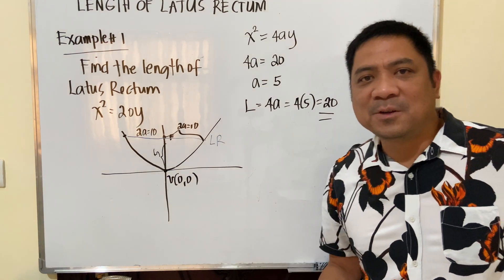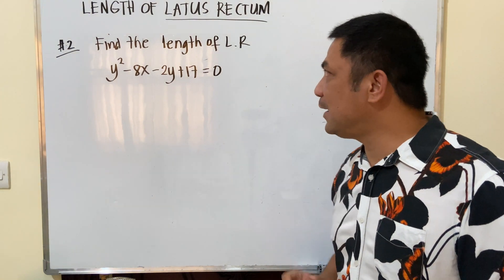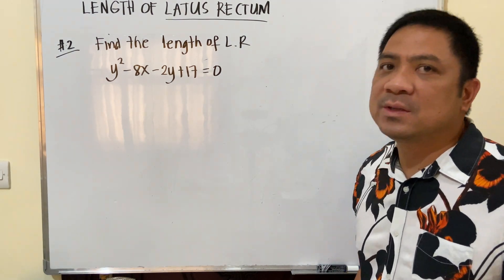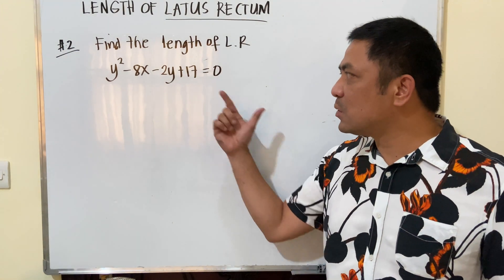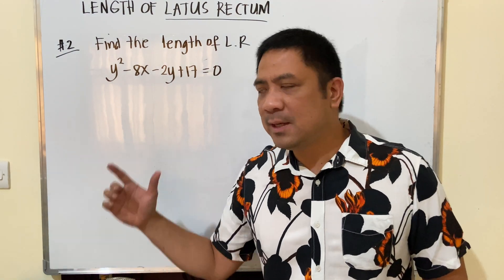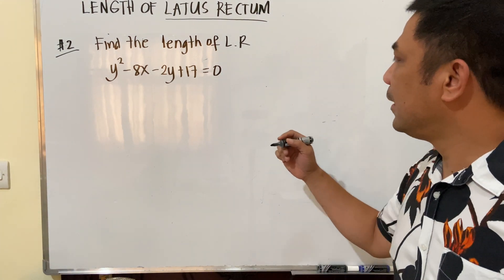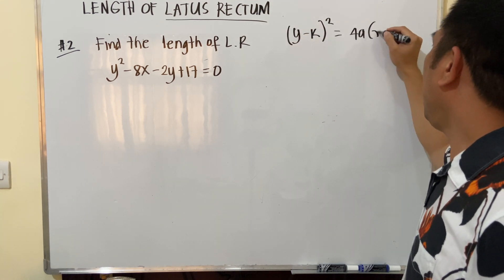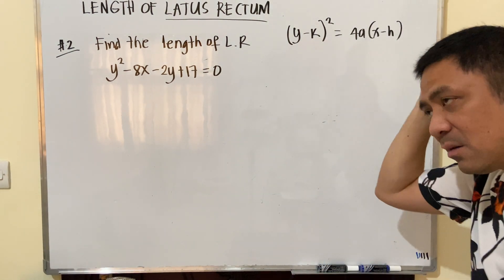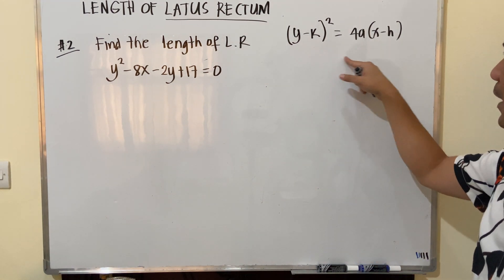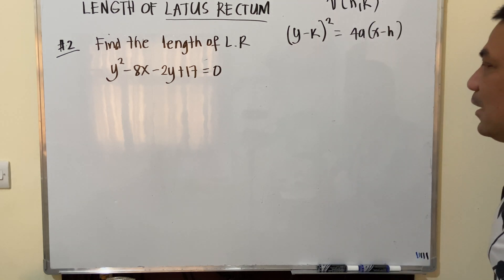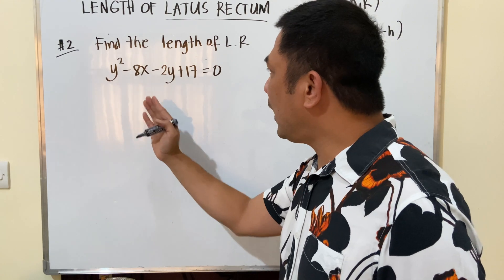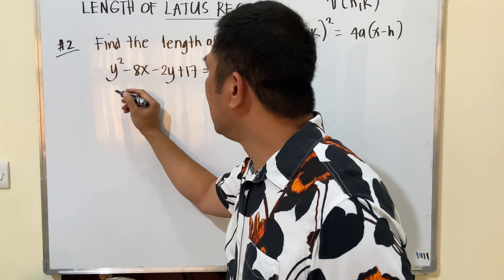Second example: find the length of the latus rectum given y² − 8x − 2y + 17 = 0. We need to transform this into standard form: (y − k)² = 4a(x − h). Let's group the y-terms: y² − 2y = 8x − 17.